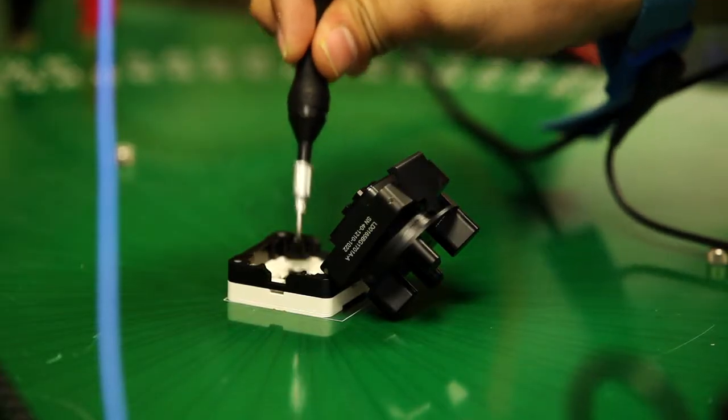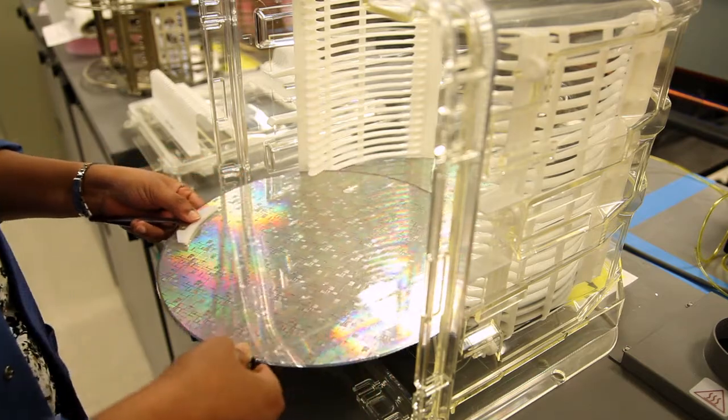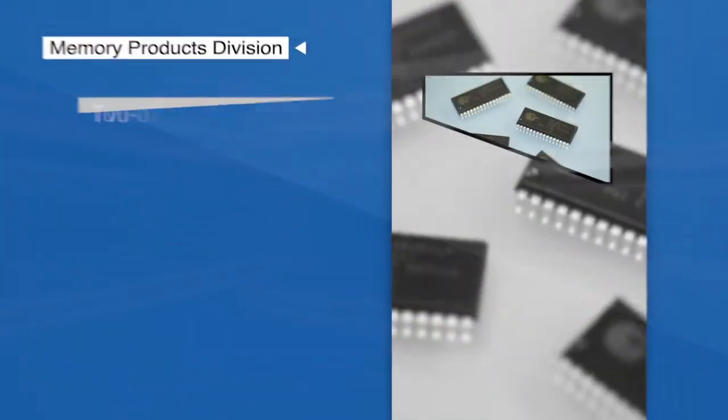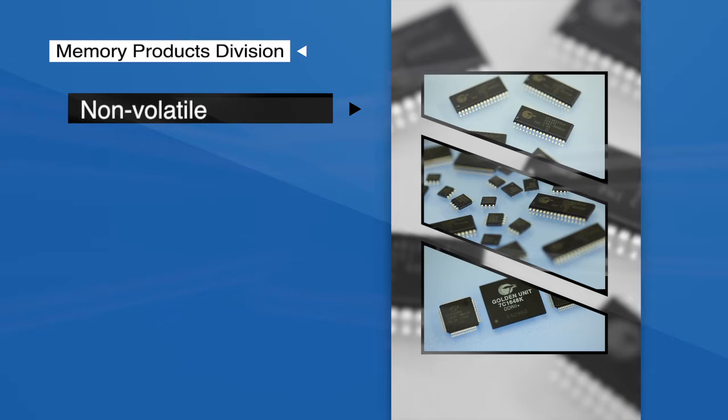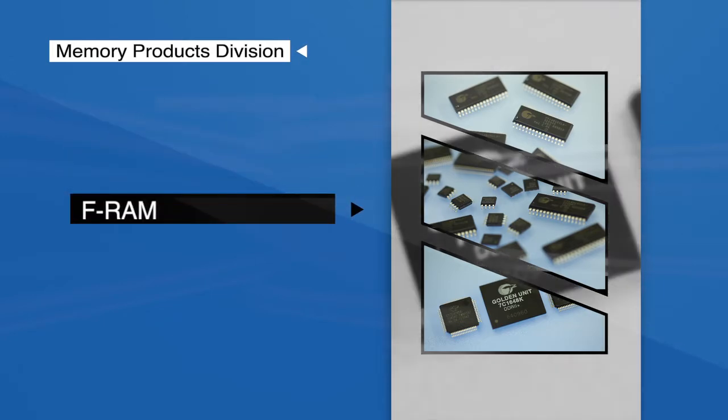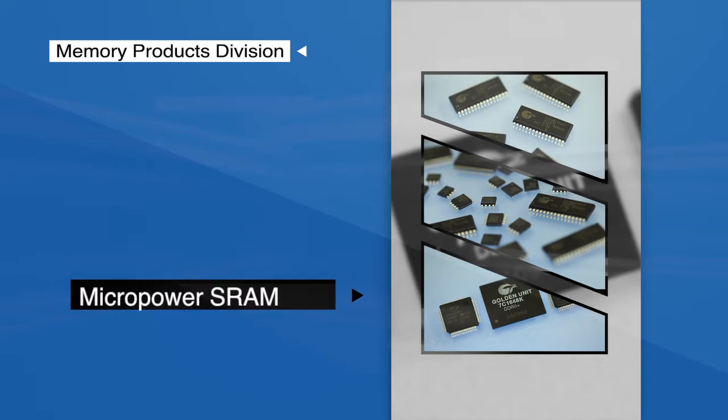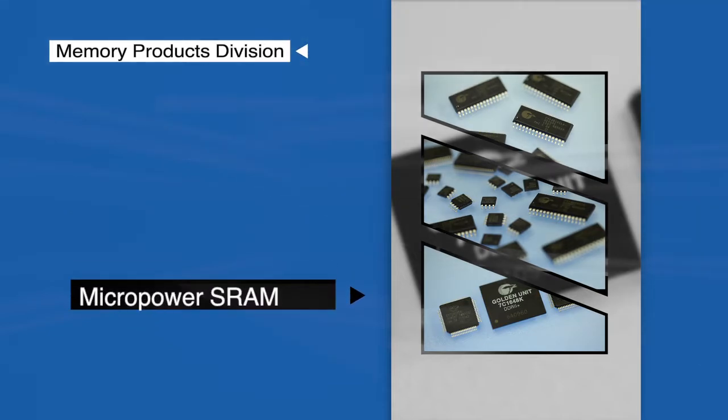We are, with regard to memories other than DRAMs and NAND flash, the number one company in the world. We have non-volatile memory, including flash and non-volatile SRAM. We have FRAM, which is ferroelectric random access memory, and we have micropower static RAMs. Together, those add up to about 40% of our company.